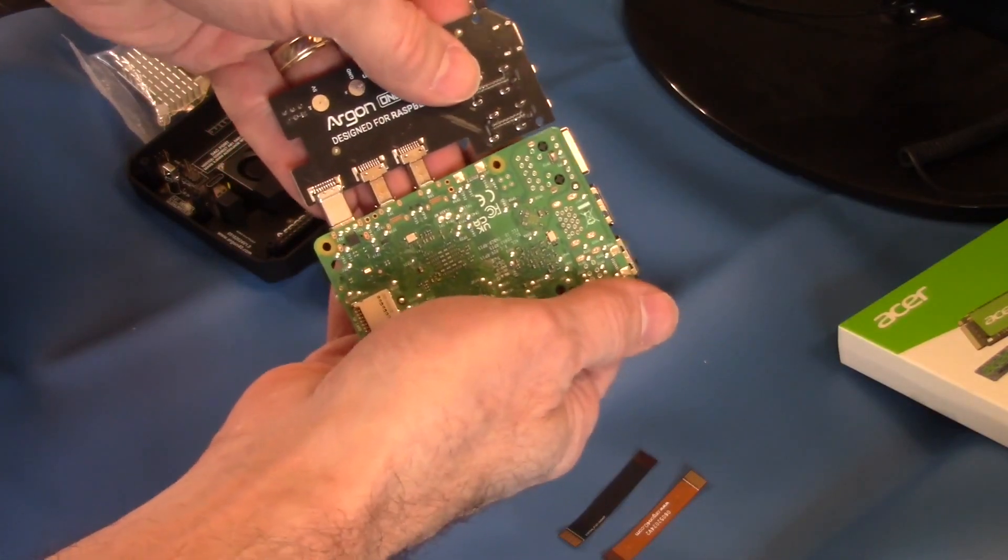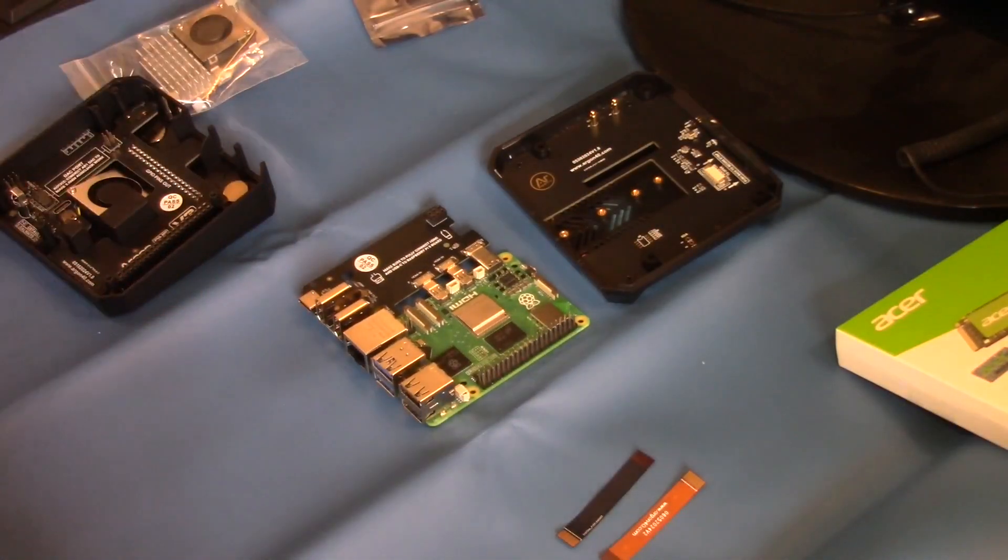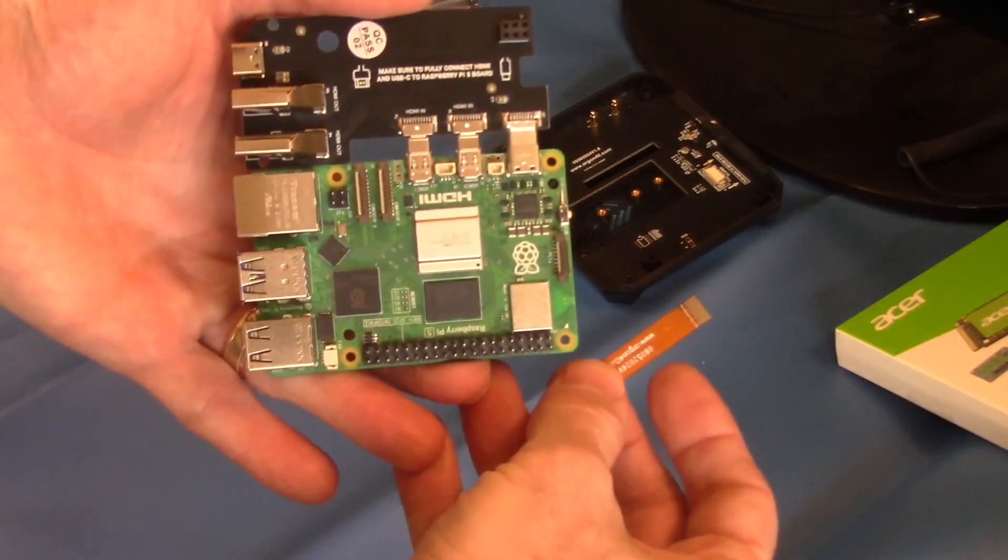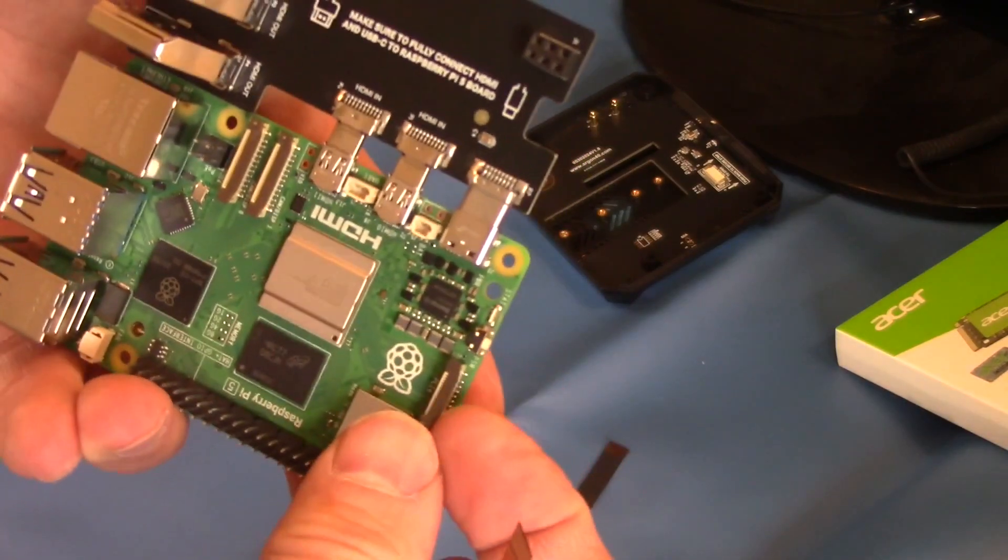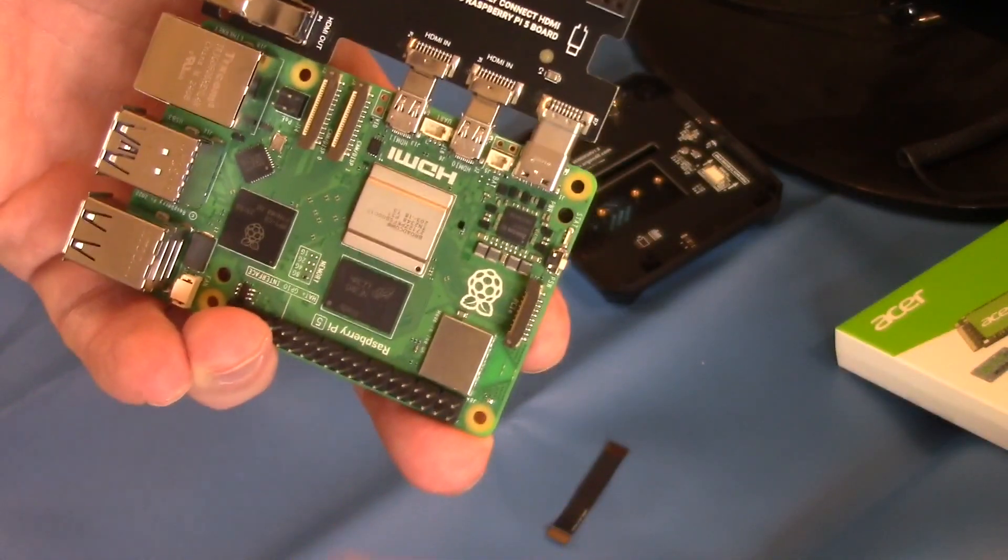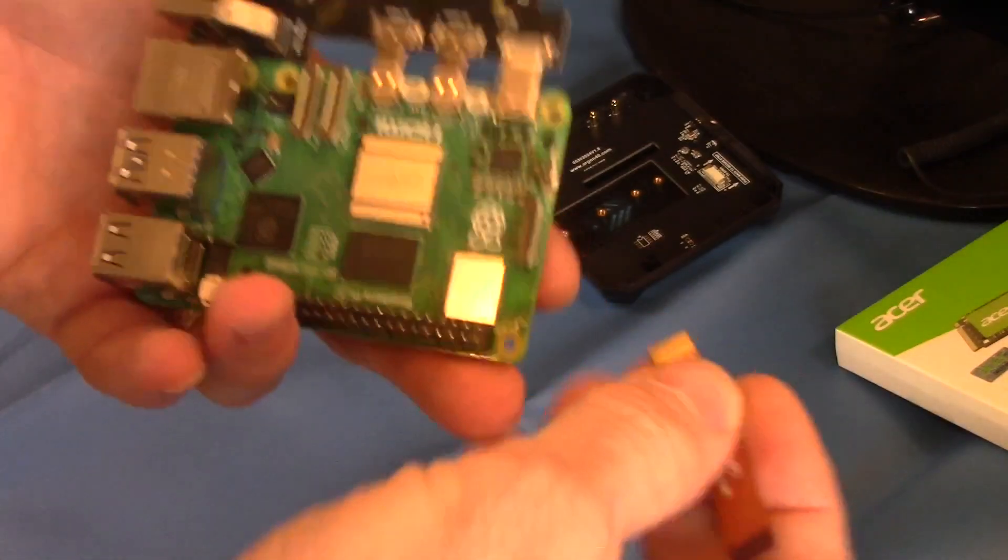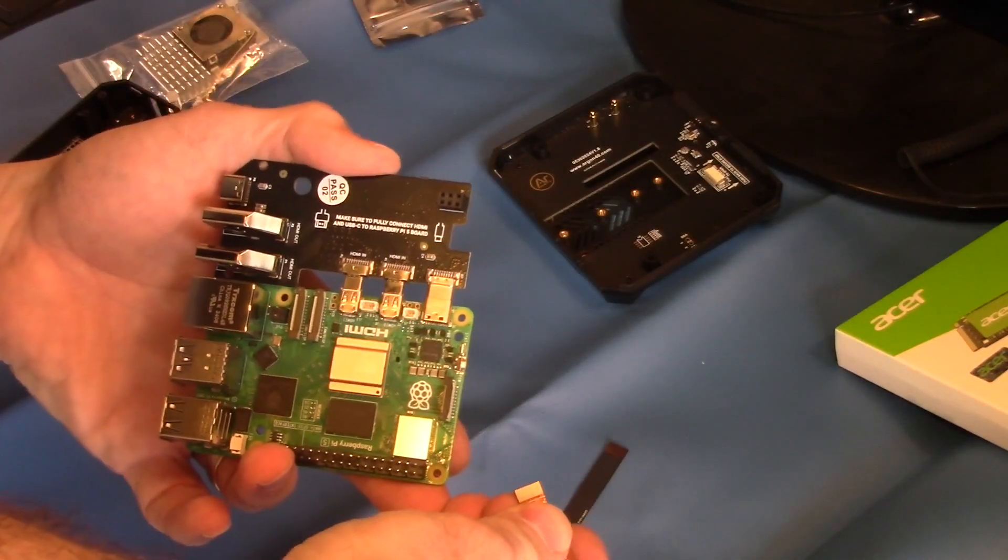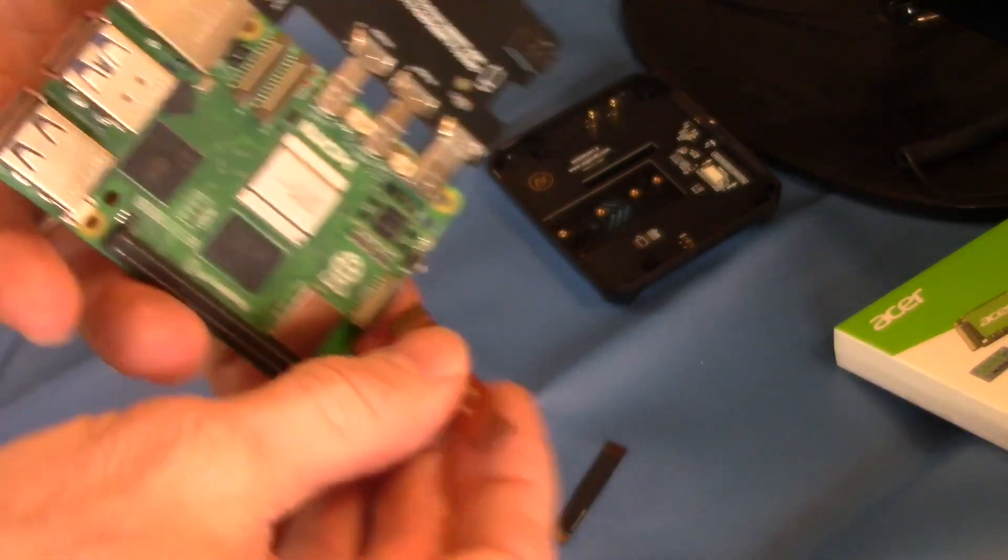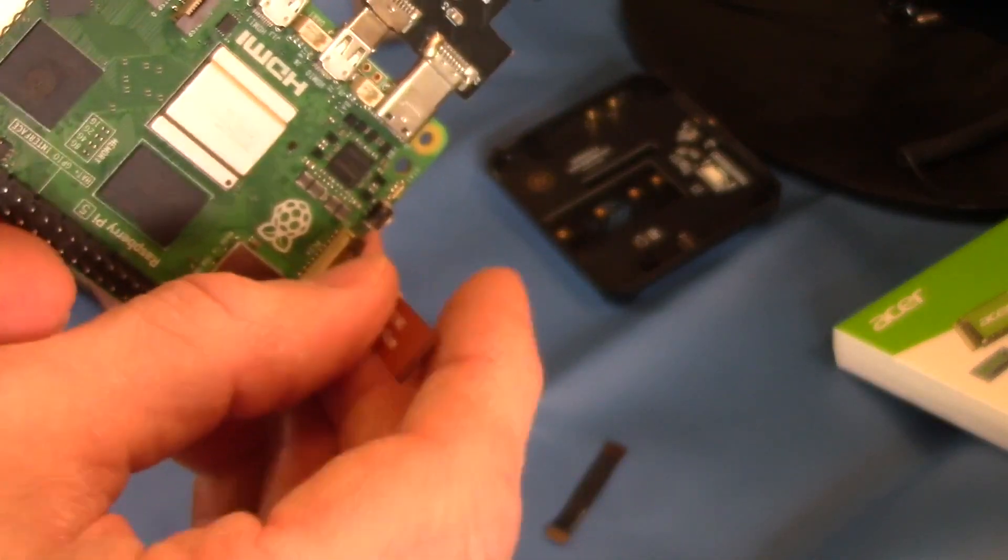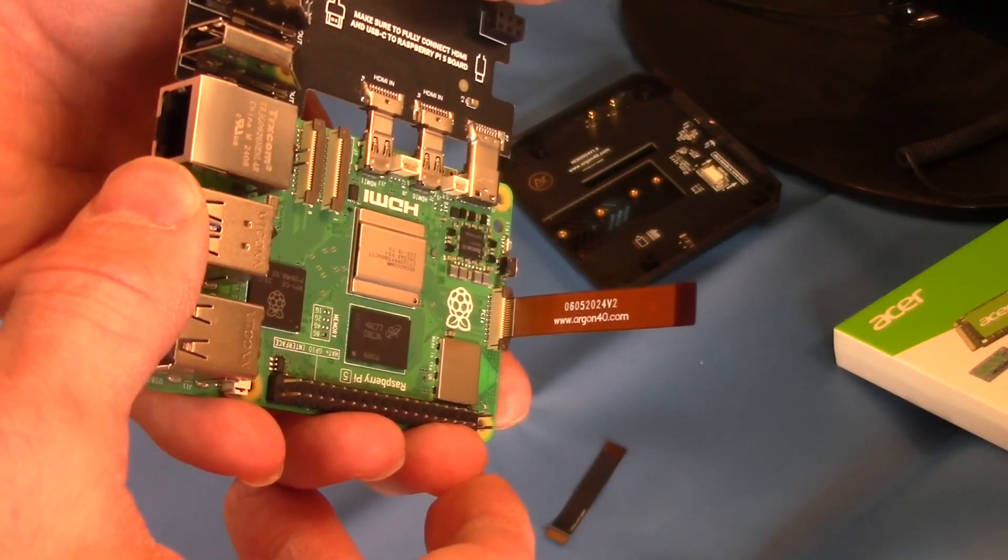Now connect the extender board to the Pi 5. Now we need to install the PCIe cable. You're going to lift up on the lock mechanism, which is that dark piece of plastic, and put that ribbon cable down through the top with the orange side facing the USB connectors. When it's in there, just push down on that dark gray connector or the locking mechanism.